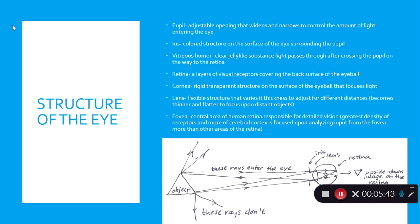The sides of the retina are more focused on peripheral vision and movement. The cornea is a rigid, transparent structure on the surface of the eyeball that focuses light, as does the lens. The fovea has the highest density of receptors, all for color vision, and the neural pathways from the fovea to the brain are more dense than other neural pathways carrying light information.